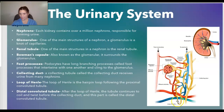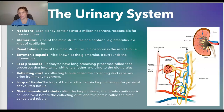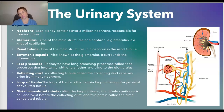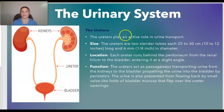After the loop of Henle, the tubule continues to coil and twist, as you can see, before the collecting duct. This part is called the distal convoluted tubule.